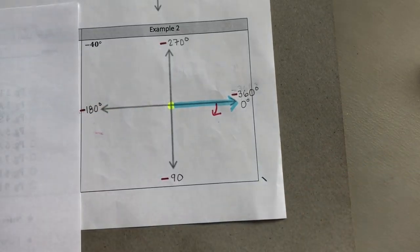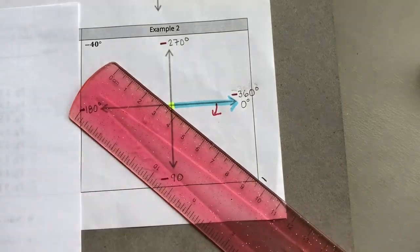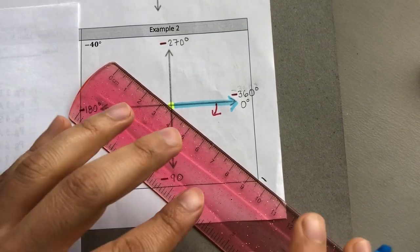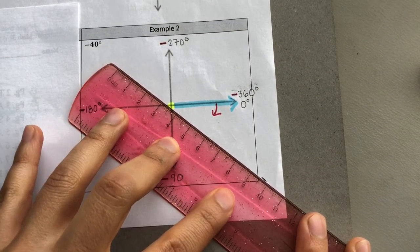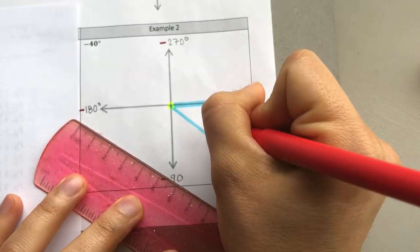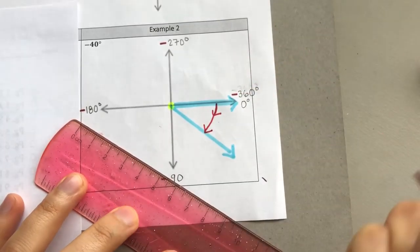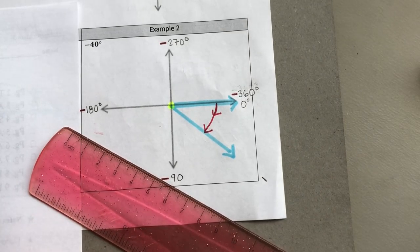Okay, grab your straight edge and draw your terminal side. There it is. We rotated negative 40 degrees.